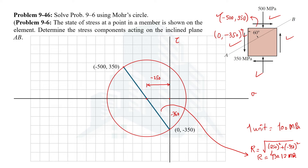Now let's determine the stress components acting on the inclined plane AB. We need to rotate this face by an angle of 60 degrees clockwise in real space. This face is represented by a line on the Mohr circle. Since 60 degrees on the actual element corresponds to 120 degrees on the Mohr circle, and the rotation is clockwise, we rotate 120 degrees clockwise on the circle to locate the required point.